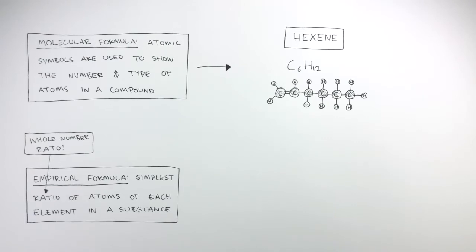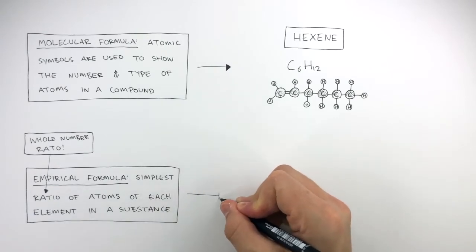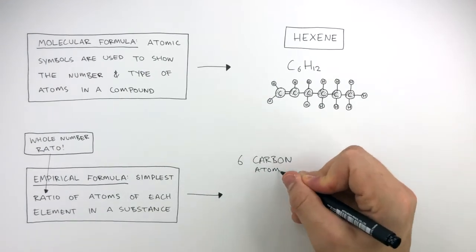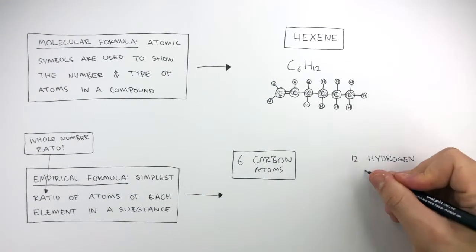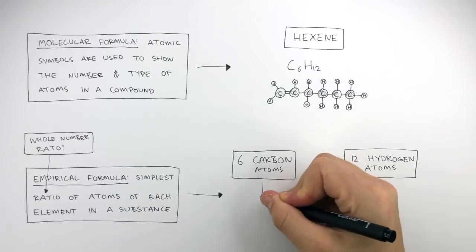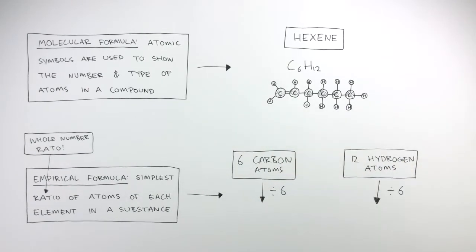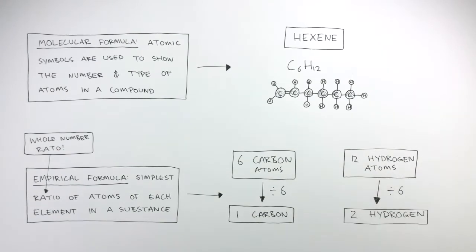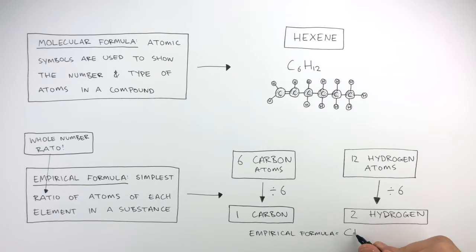So what is the empirical formula of hexene? Hexene has six carbon atoms and 12 hydrogen atoms. To find the simplest ratio, we use the biggest number which can be divided into 6 and 12. This number is 6, so we divide 6 and 12 by 6. This gives a ratio of one carbon atom to two hydrogen atoms. So the empirical formula of hexene is CH2.